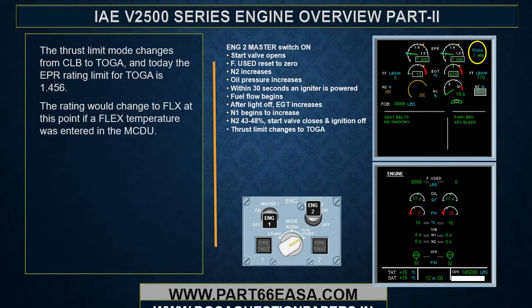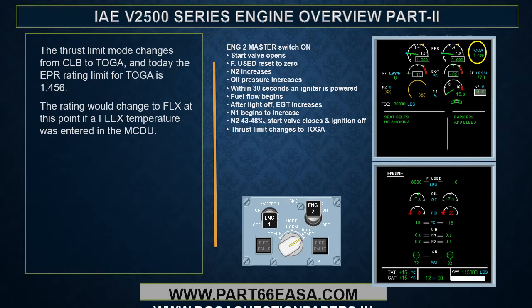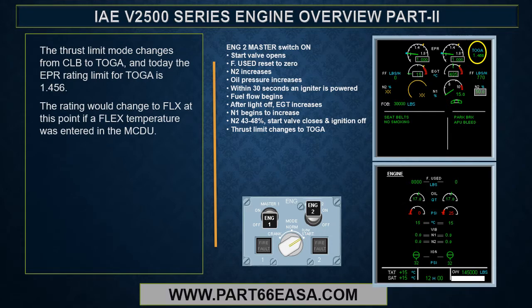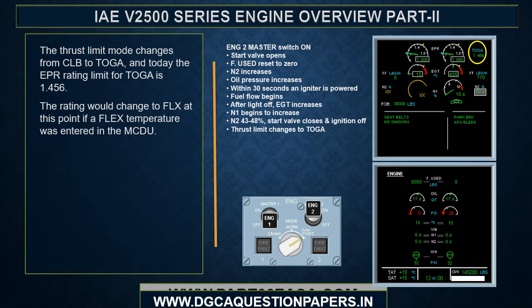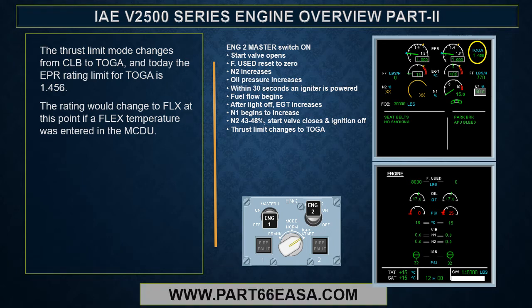The thrust limit mode changes from CLIMB to TOGA, and today the IEPA rating limit for TOGA is 1.456. The rating would change to FLEX at this point if a FLEX temperature was entered in the MCDU.